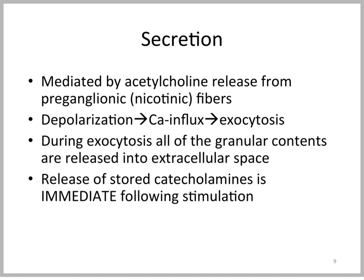When the hypothalamus determines that the organism needs to respond to stress, the sympathetic nervous system — a diffuse system — sends signals through pre-ganglionic fibers, releasing acetylcholine. These signals act on nicotinic receptors in the ganglia, leading to depolarization and calcium influx, and then exocytosis in the adrenal medulla with release of epinephrine and norepinephrine. During this exocytotic process, all granular contents are released into the extracellular space, and the release of stored catecholamines is immediate — teleologically, a stress response system must be able to act instantaneously.